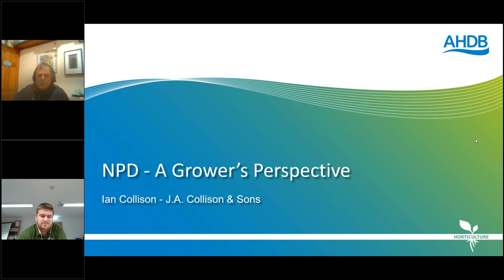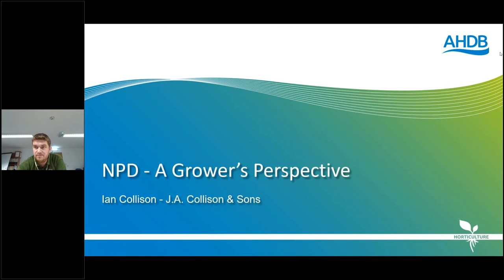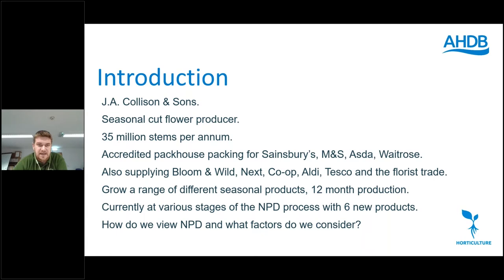Good afternoon. This is very much my perspective — it's certainly not 'how to do it'. I think a big part of NPD is making mistakes and we've probably made most of them over the years, so this is really 'how not to do it'. J.A. Collison and Sons is a seasonal cut flower producer. We produce tulips, scented stocks, asters, a range of different lilies, ornamental brassicas and a few other crops — about 35 million stems a year. We've got an accredited pack house and pack on farm for Sainsbury's, M&S, ASDA and Waitrose. We also supply raw material stems to Bloom & Wild, Next, Co-op, Aldi, Tesco and the florist trade.